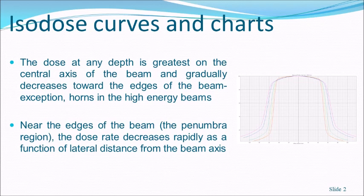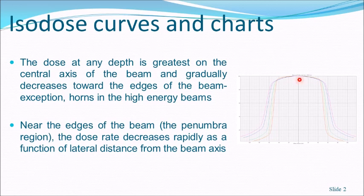Isodose curves or charts are obtained by measurement in a water phantom. Usually the dose at depth is greatest on the central axis of the beam. The dose is maximum at the central axis and gradually decreases as you go off axis, except for the case of horns in high energy photon beams due to the flattening filter. The dose at the central axis is higher than at the off-axis region and decreases as you move away.